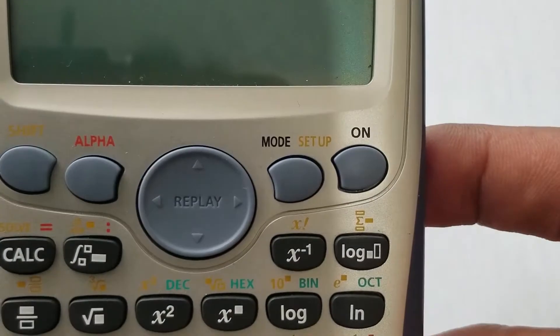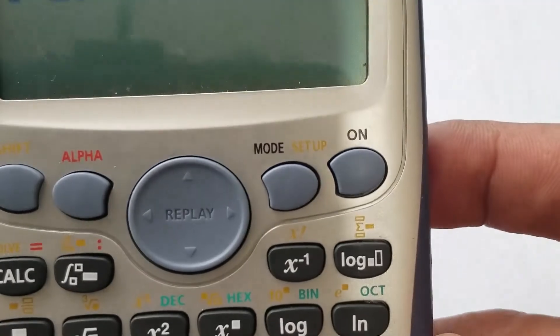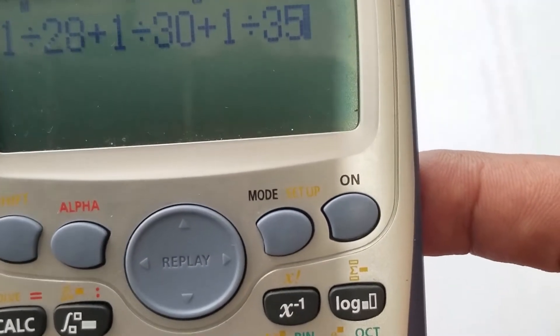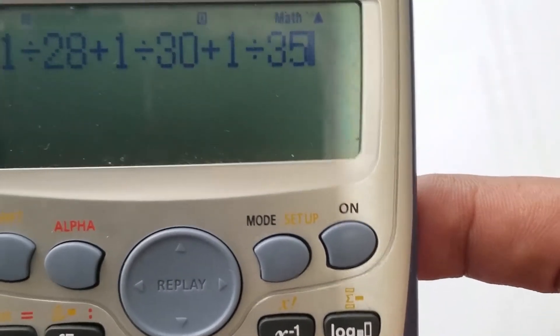So we have here 1 divided by 28, that's the first set, plus 1 divided by 30, that's the second set.